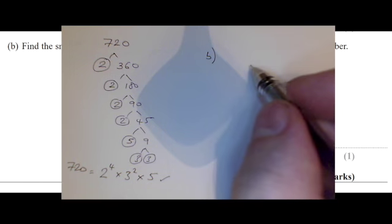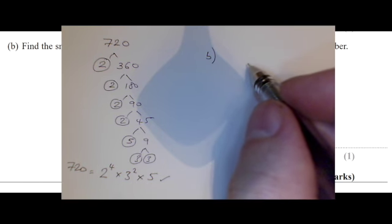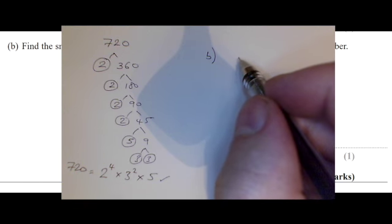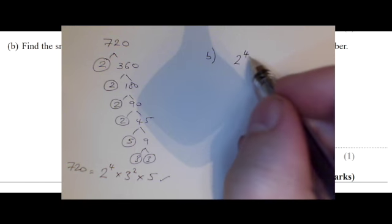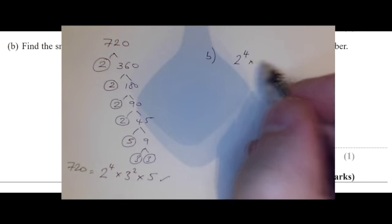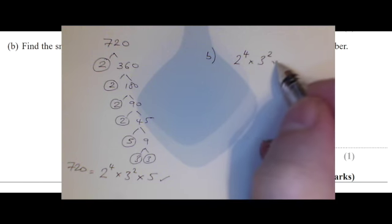Well, that's quite tricky, but what we can do is we can break that 2 to the power of 4 into 2 squared times by 2 squared. We have a 3 squared, but we only have a 5. So it looks to me like we need to multiply this by 5. But I'm just going to show my logic for that.